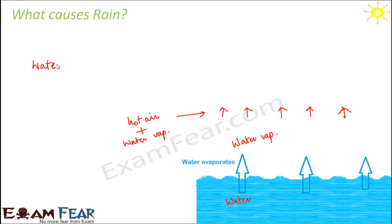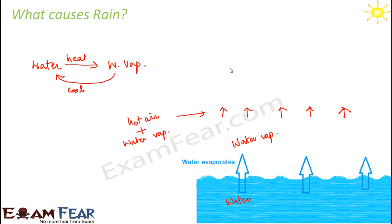Think of it this way: if you take water and heat it, evaporation takes place and water gets converted to water vapor. Similarly, if you do the reverse — if you have water vapor and cool it — it gets converted back to liquid water droplets. That is exactly what is happening here. As the rising air reaches a sufficient height, it cools down and this cooling causes condensation of water vapor into liquid water droplets.